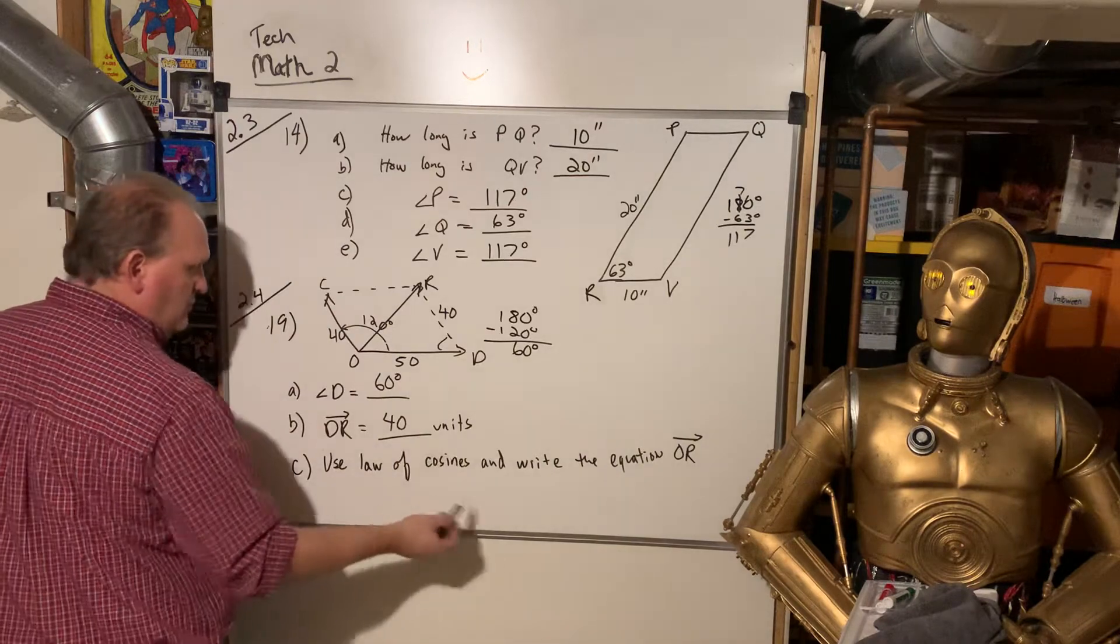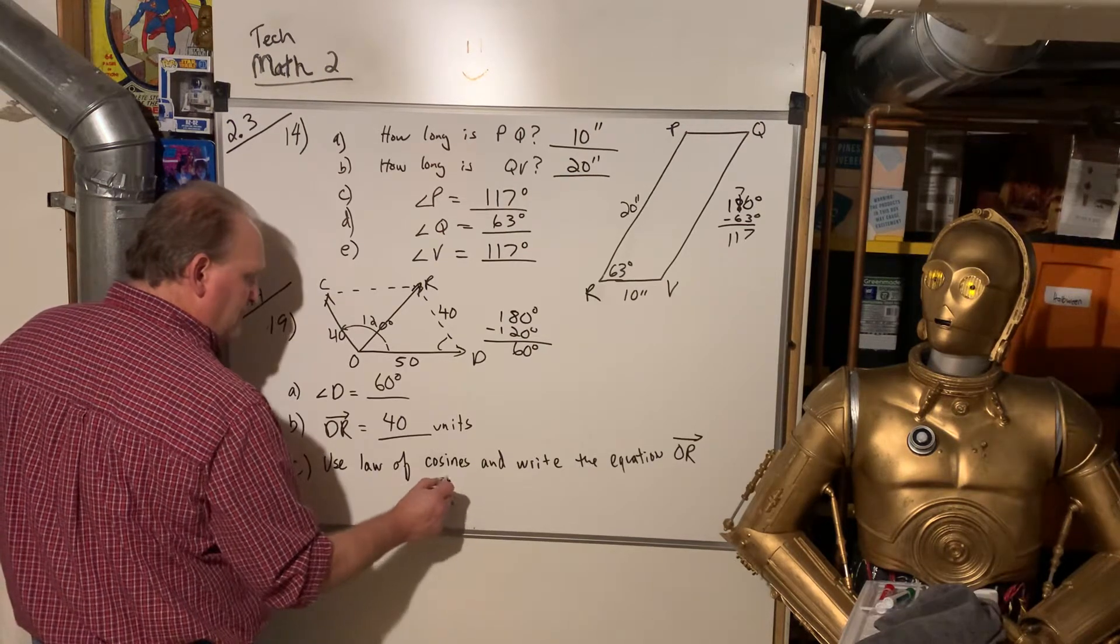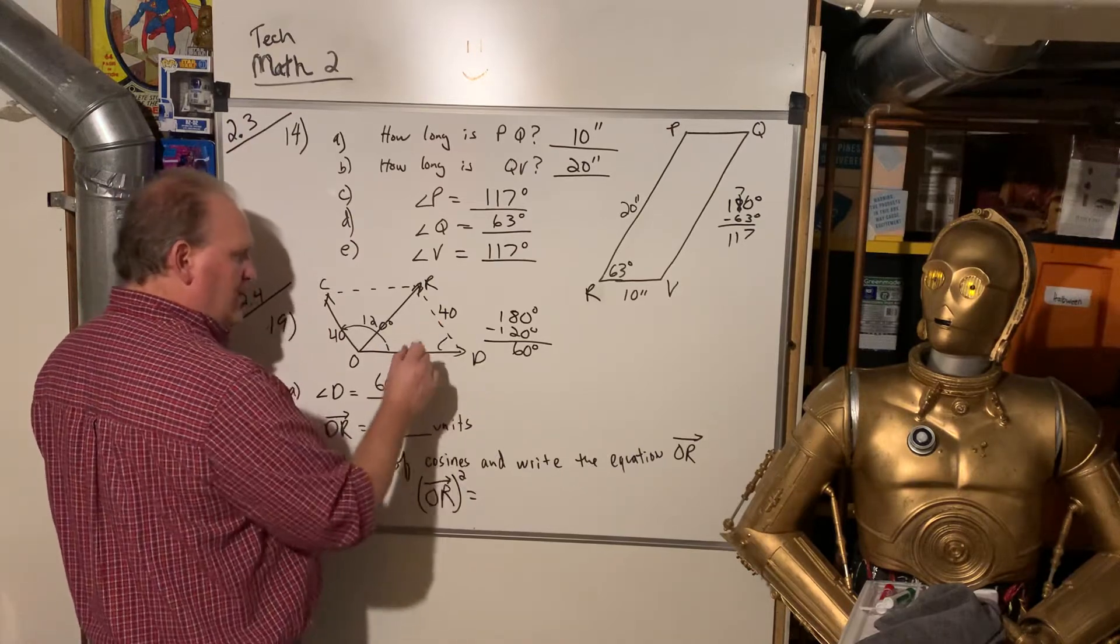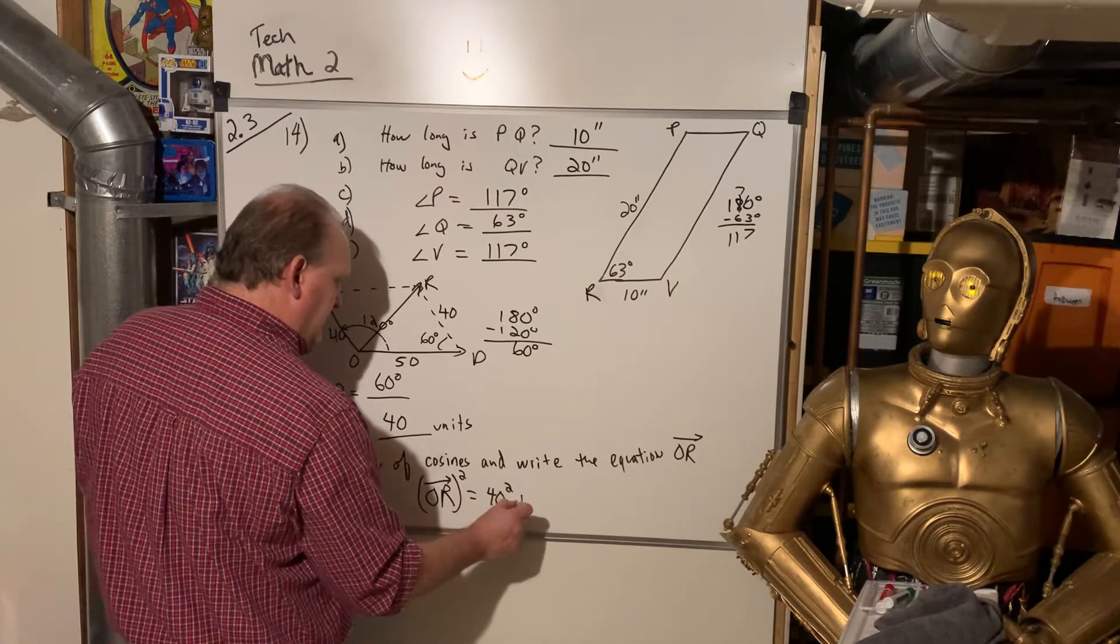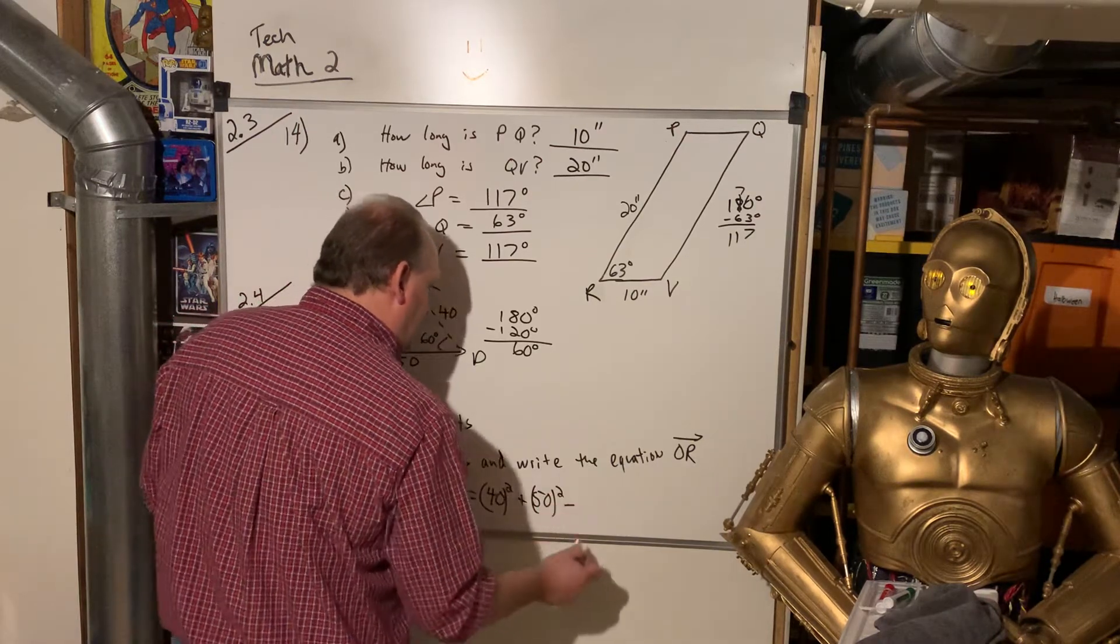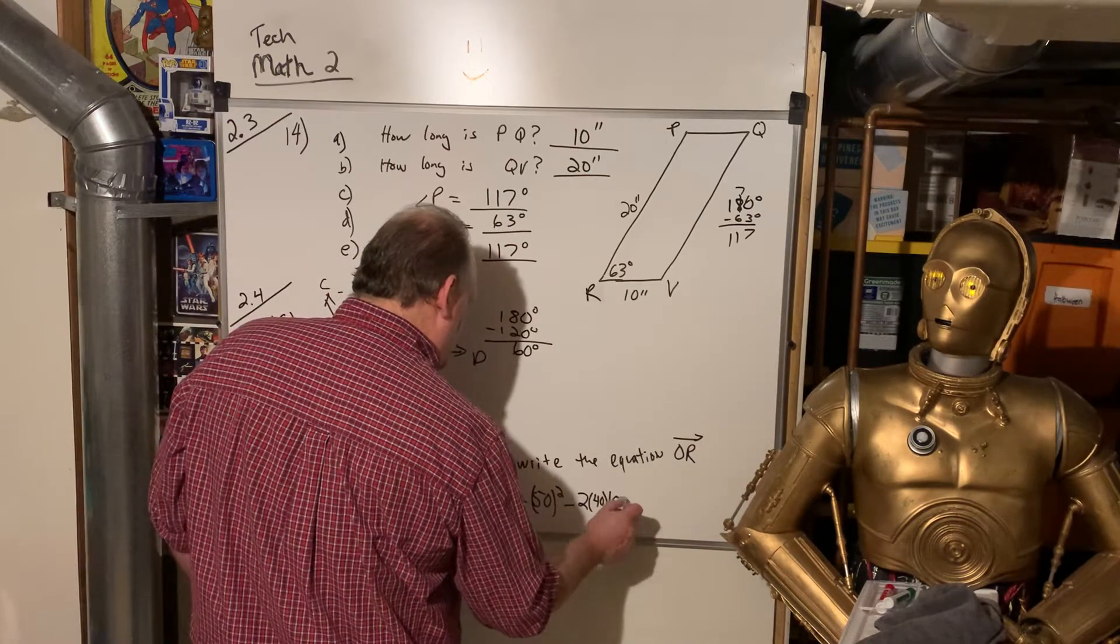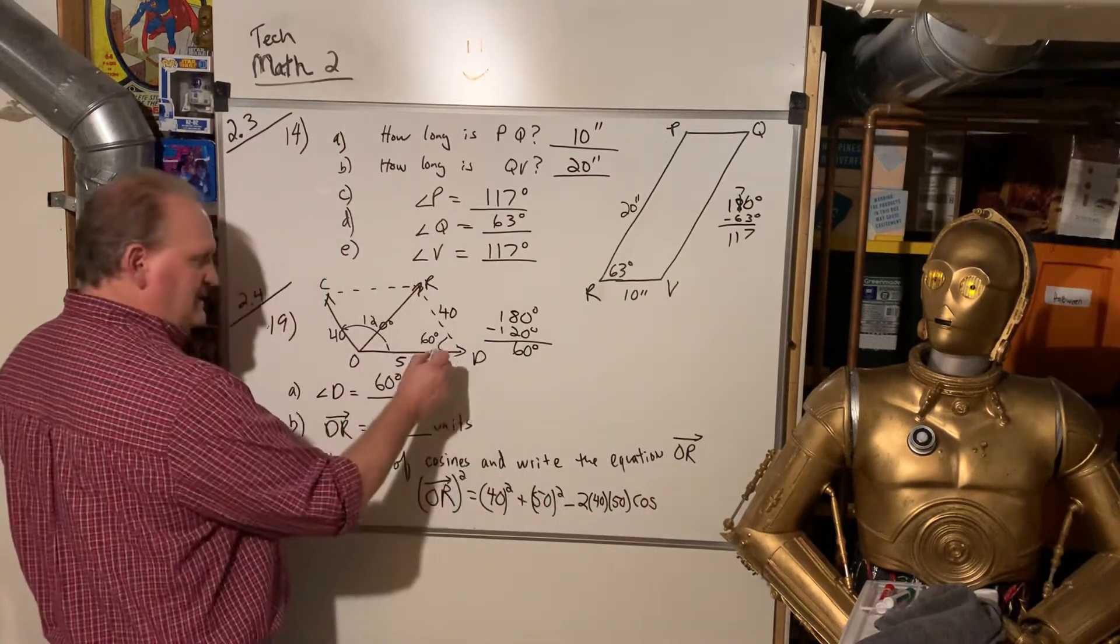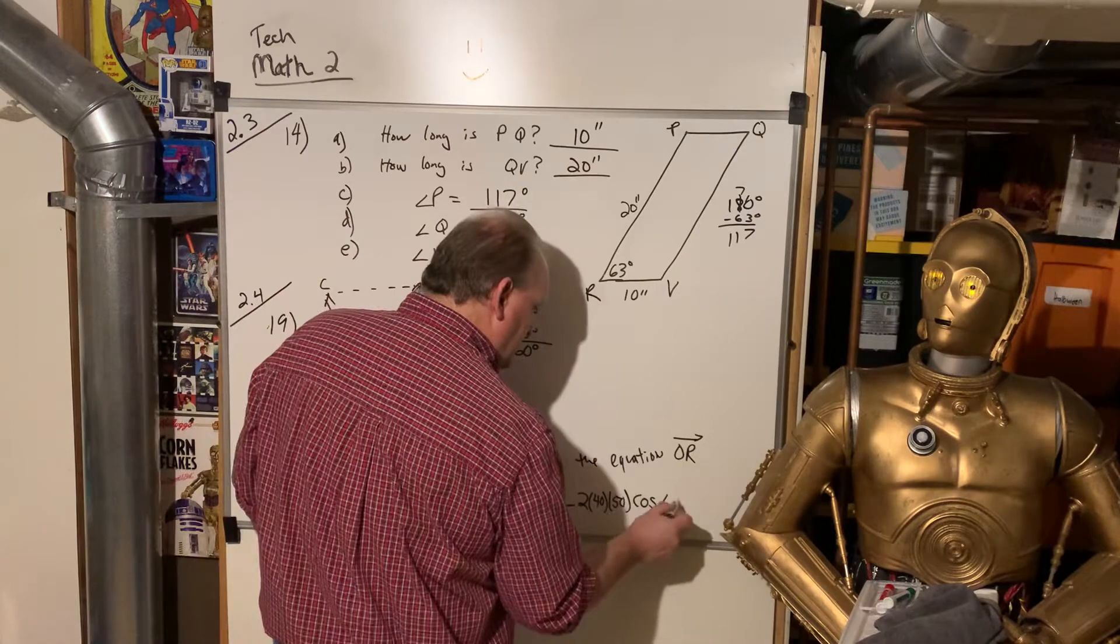But here we'll write it out the long way. So remember how that worked. It was OR, that's the resultant vector, squared, that would equal, so remember you used the opposite sides in the included angle. So it's 40 squared plus 50 squared minus, and then I think it was 2 times 40 times 50 times the cosine, remember it's the law of cosines, times the cosine of this angle, the included angle.